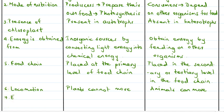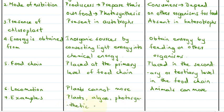We will now mention a few examples. Examples of autotrophs include plants, algae, and photosynthetic bacteria. Examples of heterotrophs include cow, lion, humans, etc.